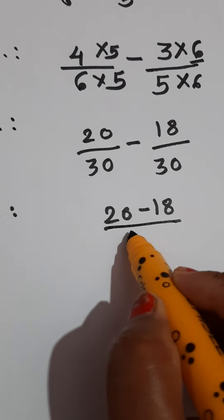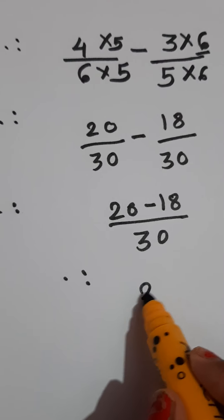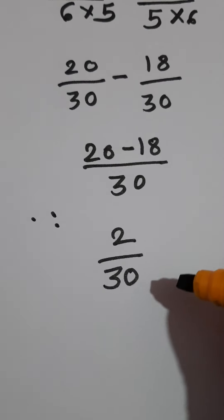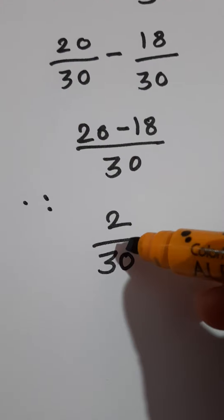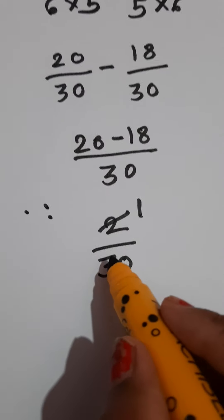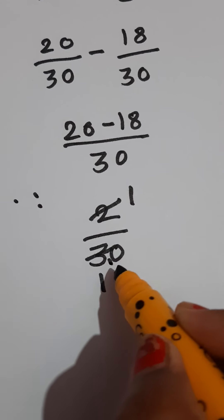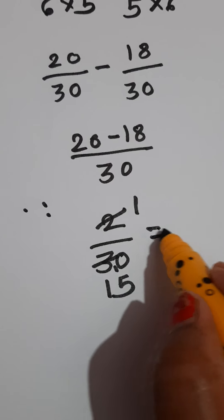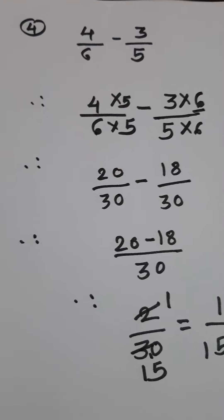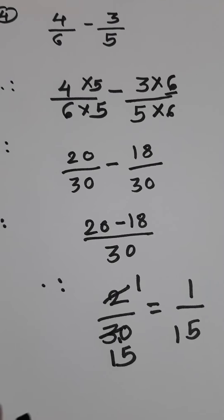20 minus 18 upon 30. 20 minus 18 is 2, so 2 upon 30. At the unit place 0 is there, so it is divisible by 2. So here also do the reduction: 2 ones are 2, and 2 goes into 30 fifteen times — so the reduction of this fraction is 1 upon 15. Like this way we can subtract unlike fractions: first make them like fractions, and then do the subtraction.